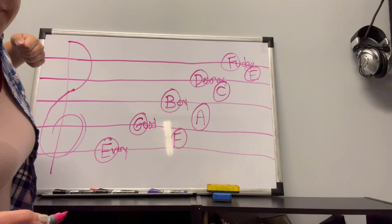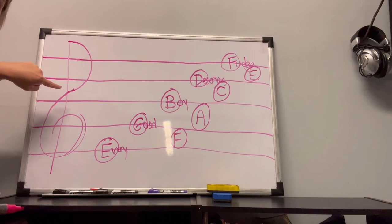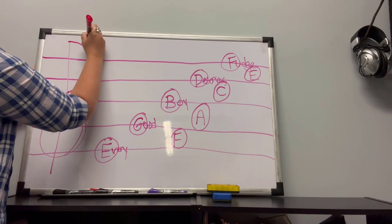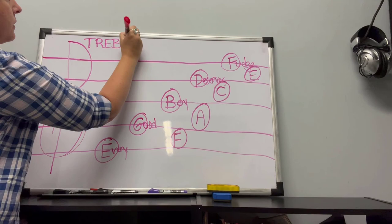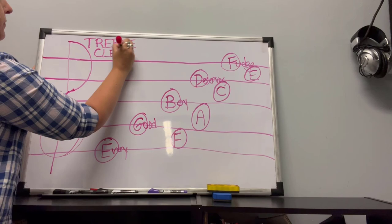So now we know the letter names for all the lines and spaces for the treble clef. And if you have a hard time remembering this, I'll spell it up here for you. It's T-R-E-B-L-E. This is a treble clef, that thing right there. Alright, so we did it.